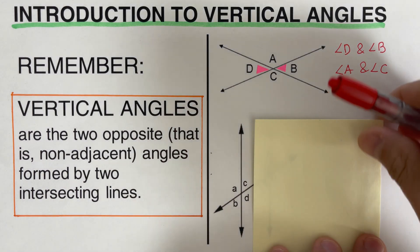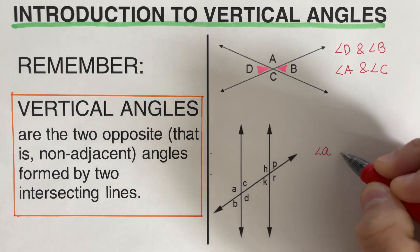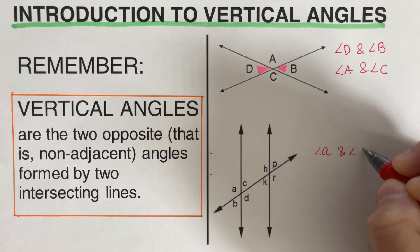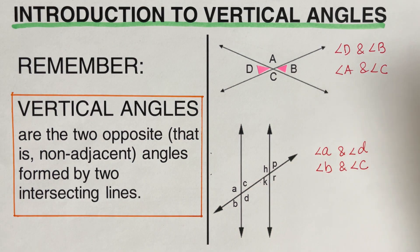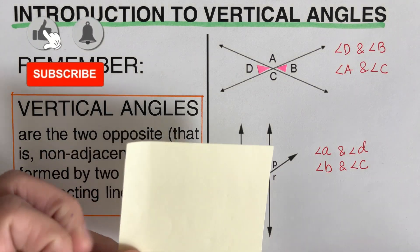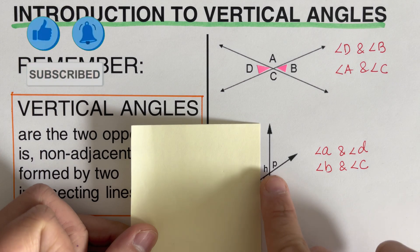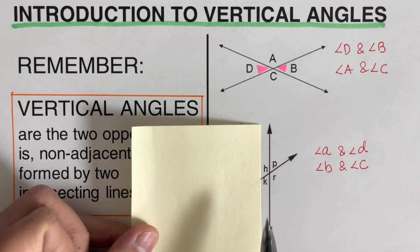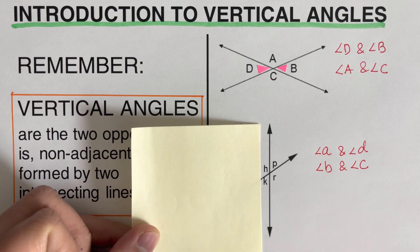On the other hand, we can cover the angles we already identified and determine the vertical angles on this other branch. As you can see here, the opposite pairs are H and R, and P and K. So we can write those out as our vertical angle pairs.